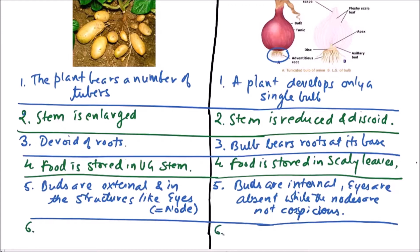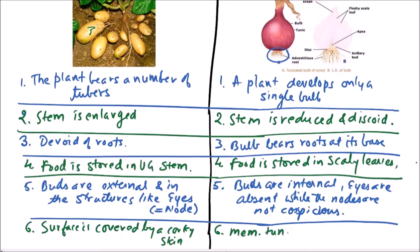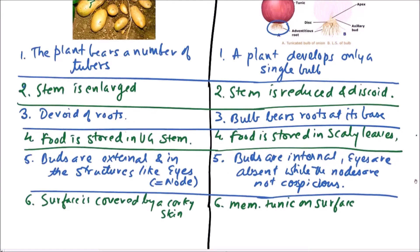In a tuber, the surface is covered by a corky skin — you can observe the corky skin on the surface. In a bulb, a membranous tunic on the surface may or may not be present.